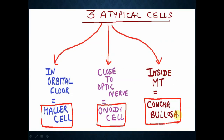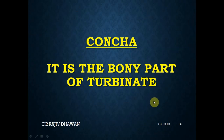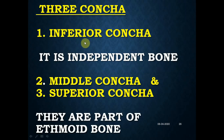The third variable cell: if the ethmoid air cell grows into the middle turbinate, it is called concha bullosa. Concha is the bony part of the turbinate. The turbinate is the projection on the lateral wall of the nose. There are three turbinates: inferior, middle, and superior. Every turbinate has a bone inside - the inferior concha, middle concha, and superior concha. The inferior concha is an independent bone, but the middle concha and superior concha are parts of the ethmoid bone.